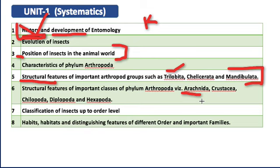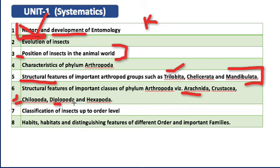For Chilopoda — the example is centipede. Visualize the centipede: it has a long body divided into head and trunk (thorax and abdomen cannot be distinguished, so together called trunk). The trunk is divided into multiple segments, with one pair of legs per segment. The first pair of legs has a poisonous claw — that is a very important feature. For Diplopoda — the example is millipede. The body is divided into head and trunk, with two pairs of legs per segment. They are basically scavengers.